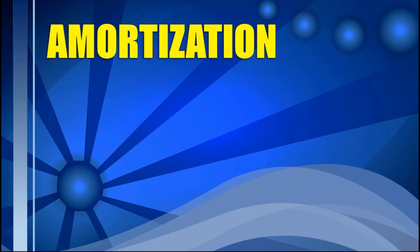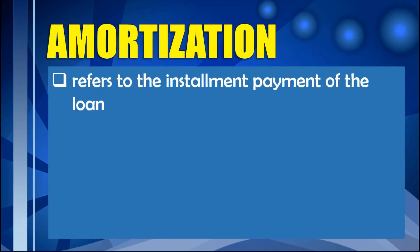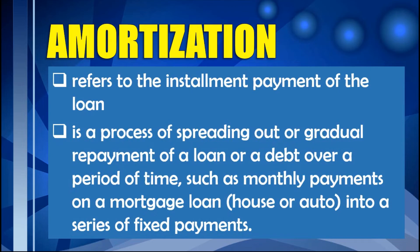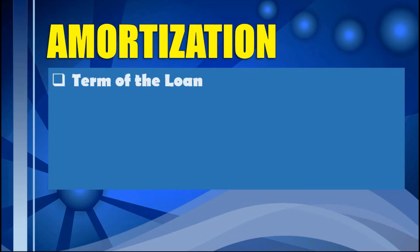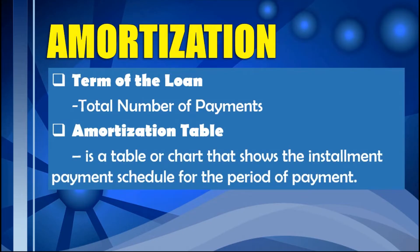This means you will be paying on an installment basis, which refers to amortization. Amortization refers to the installment payment of the loan — it is a process of spreading out or gradual repayment of a loan or debt over a period of time, such as monthly payments on a mortgage loan, into a series of fixed payments. In amortization, the term of the loan refers to the total number of payments, and we use an amortization table.